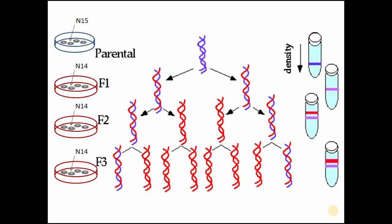Let's do a quick recap of the Meselson and Stahl experiment. They first grew E. coli in N-15 heavy isotope medium, which incorporated N-15 into the DNA, causing it to settle at the bottom after centrifugation. When transferred to N-14 lighter medium and grown for one generation, the DNA strand split during replication and a new N-14 strand was synthesized, producing hybrid DNA that formed an intermediate band in the centrifuge tube.